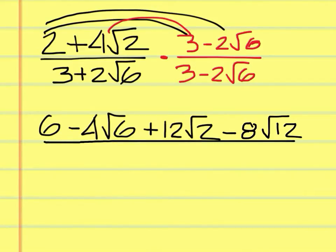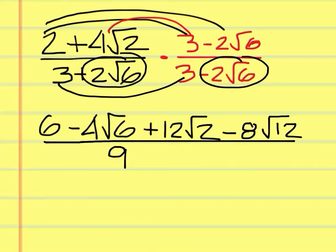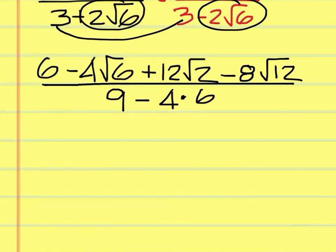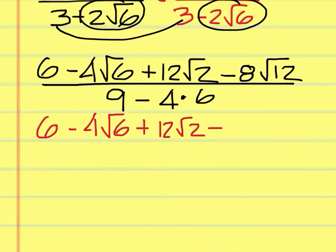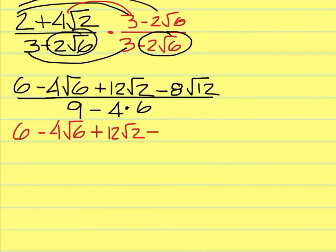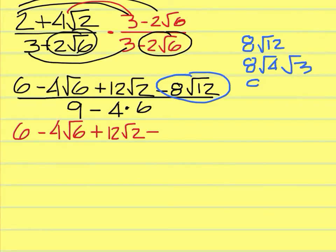On the bottom, we're just multiplying to get 9, and then this times this would be minus 4 times 6. So we have a lot to clean up. On the next line: 6 minus 4 square root of 6 plus 12 square root of 2. The 8 square root of 12 can be simplified: 8 square root of 12 is 8 square root of 4 times square root of 3, and 8 times 2 is 16, so that becomes 16 square root of 3.